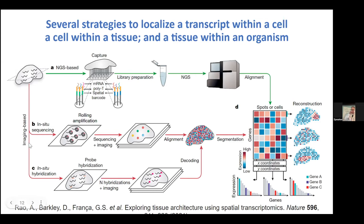The second method is also sequencing-based: in situ sequencing using rolling circle amplification. It takes your transcript, makes a circle, and hyper-amplifies a single molecule into hundreds or thousands of copies. The advantage is that your product doesn't move—it stays in place—and you image the fluorophores bound to each transcript. This method is quite sensitive, more so than the array-based method. The challenge is that you have to learn where the borders of your cell are. What is the cell? What shape is it? Cells are messy—they have projections, they interweave. Defining what is a cell remains a fundamental challenge in spatial transcriptomics.